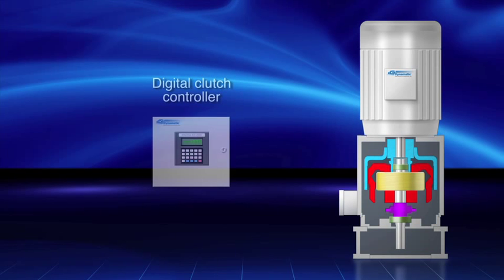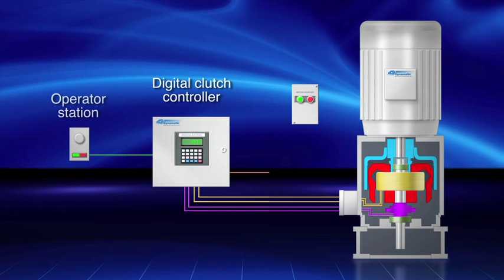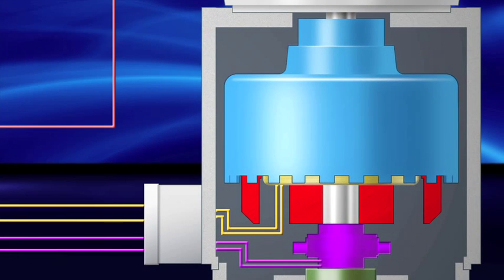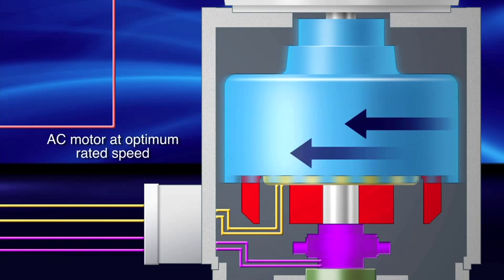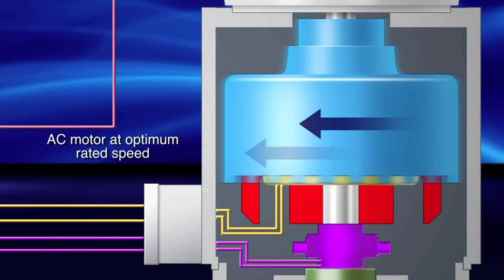A digital clutch controller, that typically uses less than 1% of the total system power, is used to govern the voltage sent to the clutch coil. By design, Dynamatic allows the AC motor to run at its optimum rated speed.